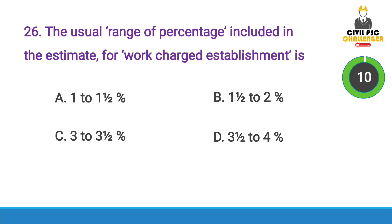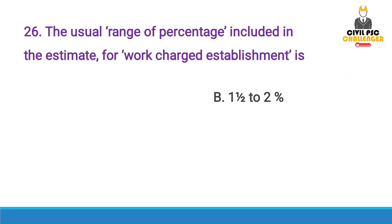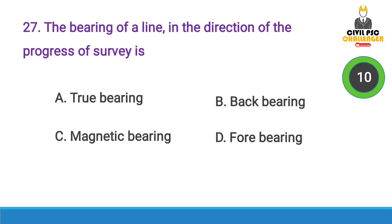Next question: The usual range of percentage included in the estimate for overhead charges and establishment is — Answer option B, 1.5 to 2%.